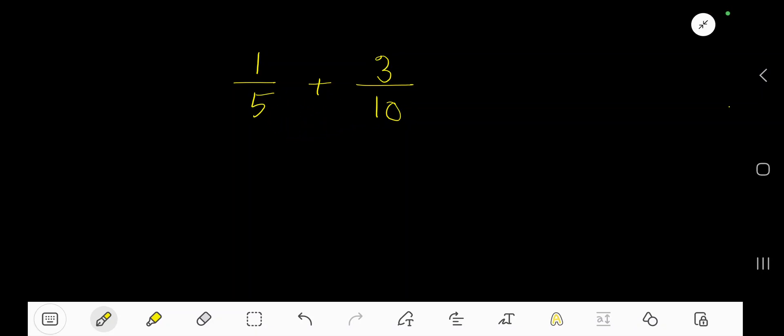To add 1 over 5 plus 3 over 10, to add this fraction with this fraction we need the same denominator. So here 10, here 5, so to make it to get the same denominator we have to consider equivalent fractions.